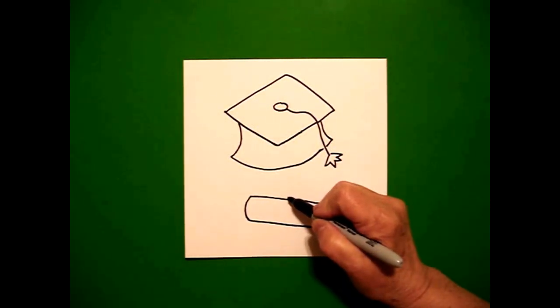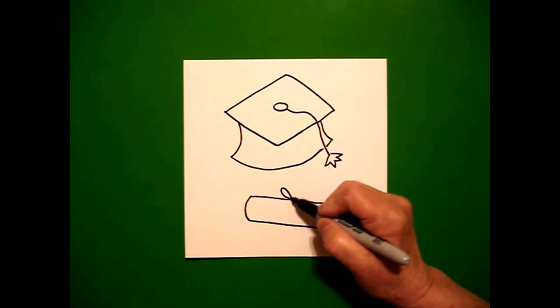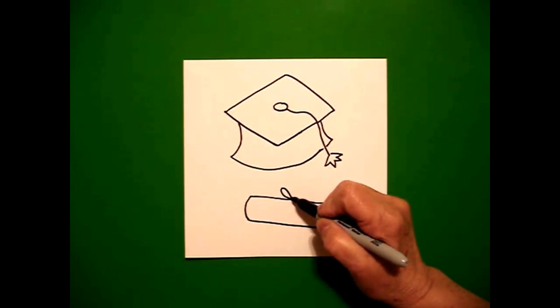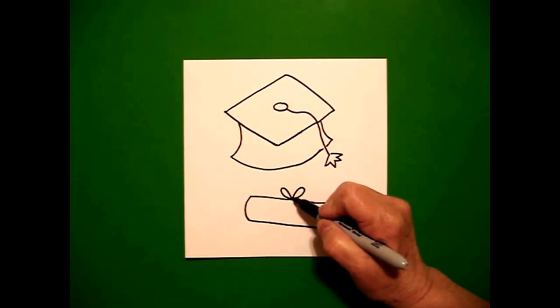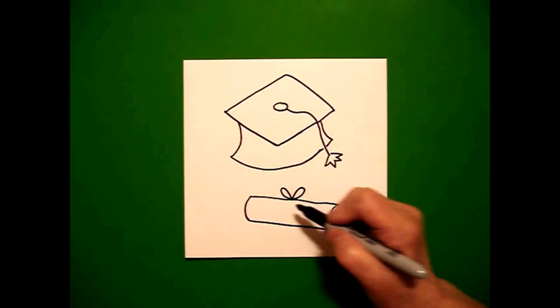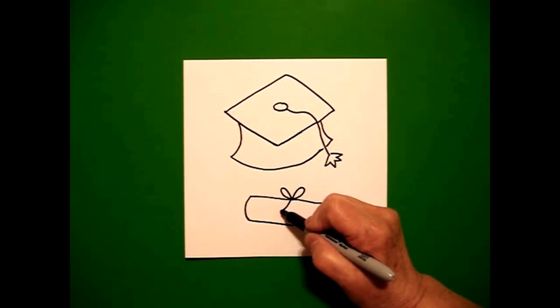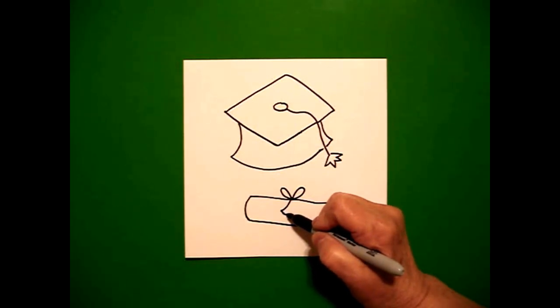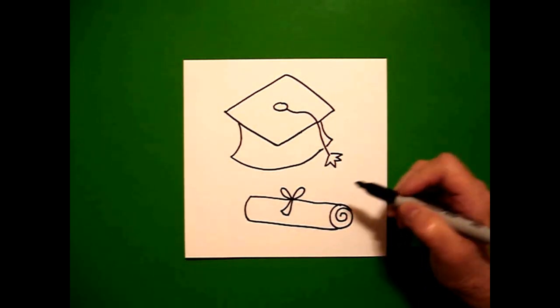I come right here at the middle and I go loop up down connect on the left, loop up down connect on the right. On the bottom I draw a curve line out, little curve line in, curve line up, connect.